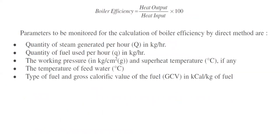Boiler efficiency is simply given as heat output divided by heat input, multiplied by 100. The parameters to be monitored for calculation of boiler efficiency by the direct method are: quantity of steam generated per hour in kg/hr, quantity of fuel used per hour in kg/hr, working pressure in kgf/cm² gauge, superheat temperature if any, and temperature of feed water, type of fuel, and gross calorific value of the fuel.